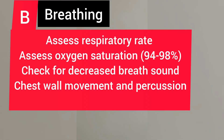B stands for Breathing. For breathing, you assess the patient's respiratory rate and oxygen saturation. The normal oxygen saturation should be between 94 to 98 percent, unless the patient has COPD, in which case it can be 88 to 92 percent. Also check for decreased breath sounds, check if the chest is moving appropriately, do chest wall percussion, and assess lung auscultation.